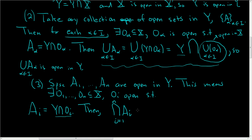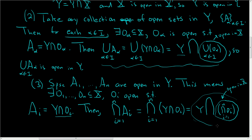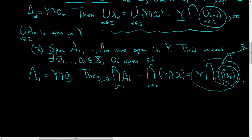Each A_i is Y intersected with O_i, so the intersection of the A_i's equals the intersection of (Y intersected with O_i), which equals Y intersected with the intersection of the O_i's. This is a finite intersection of open subsets of X, so it is open in X. Therefore we have Y intersected with an open subset of X, which means this whole set is open in Y — showing that this finite intersection of open sets of Y is open in Y.